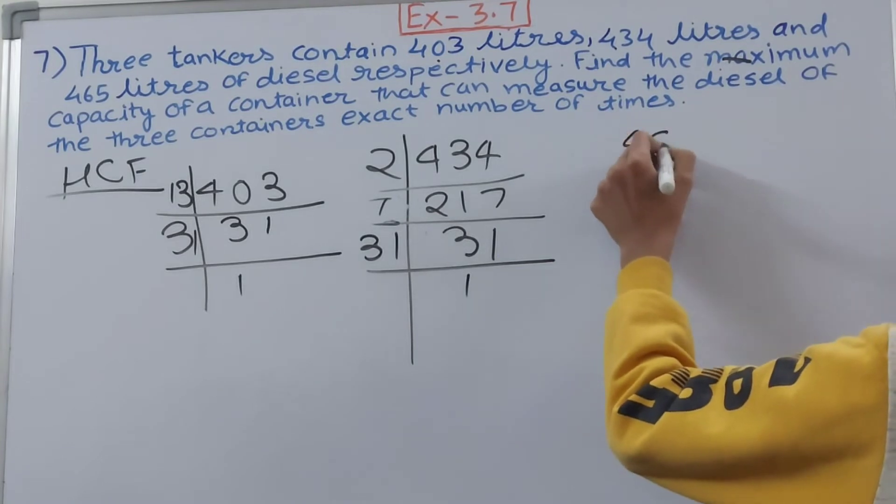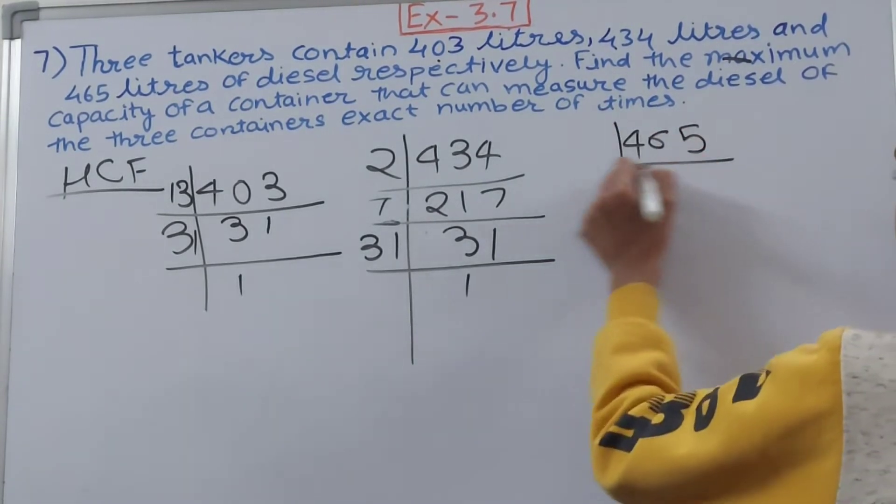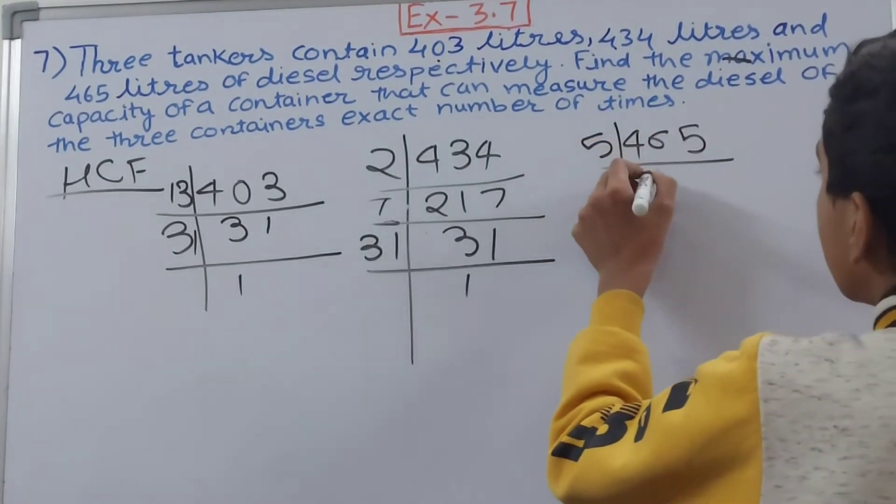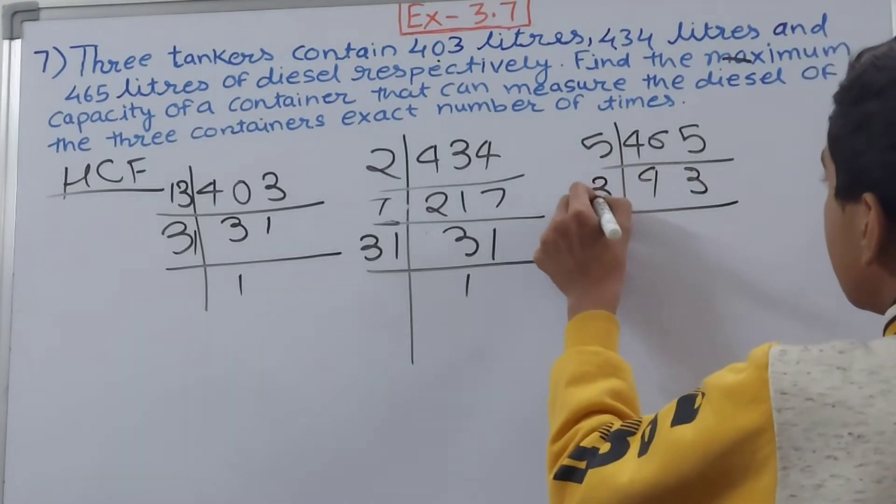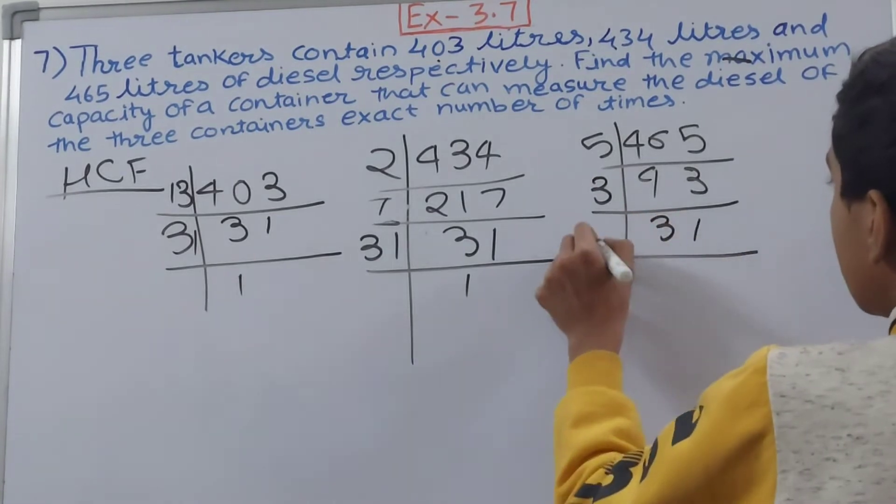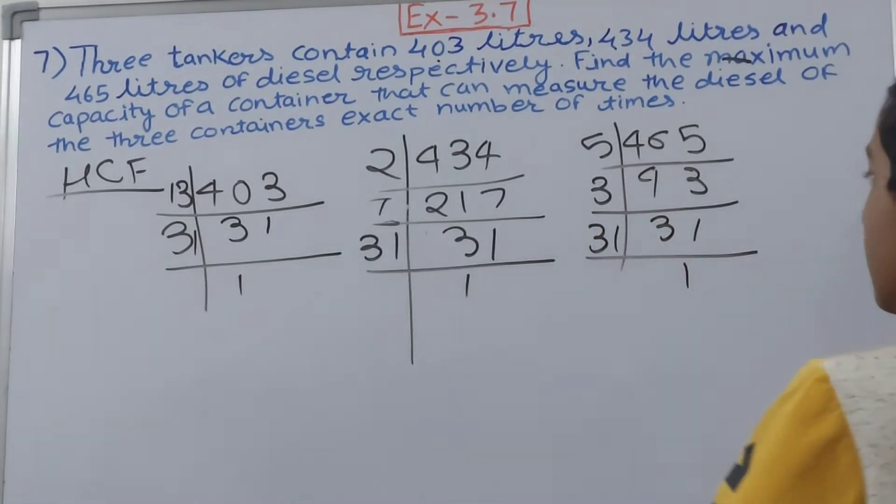Then next we have 465. Let us see for this: it will go by 5, 9 and 3, 93. Now 93 will go by 3, 3 and 1. Again 31 is a prime number.